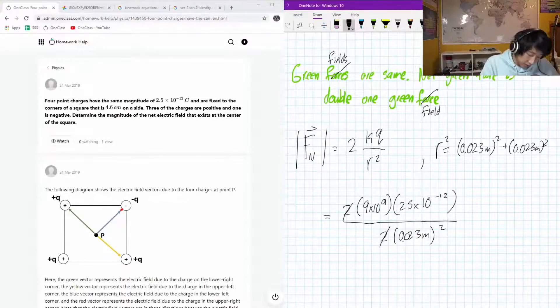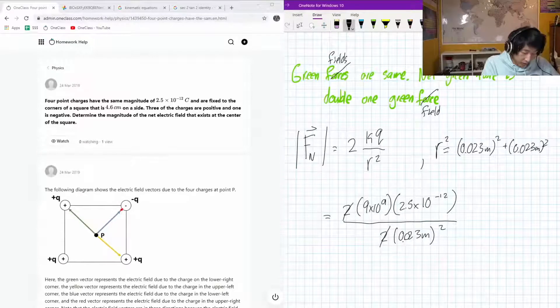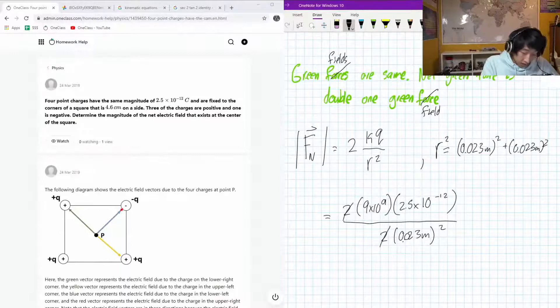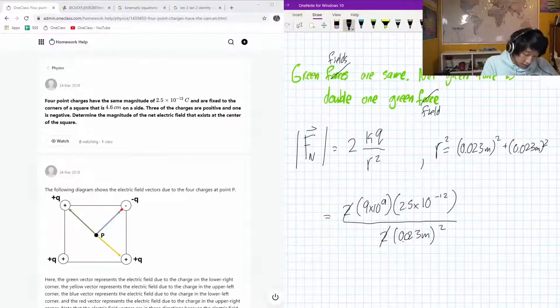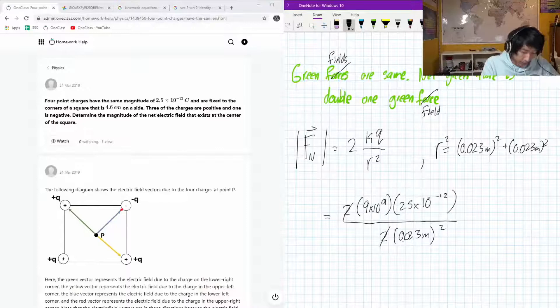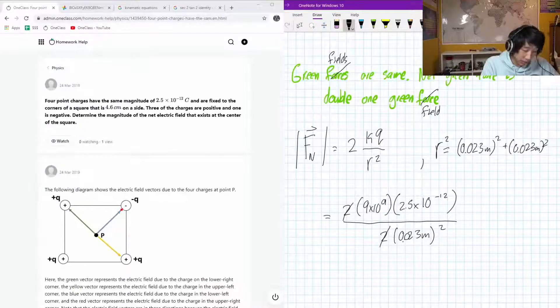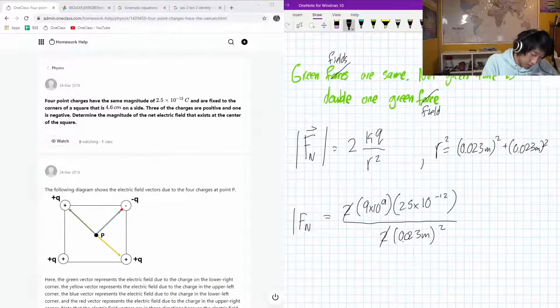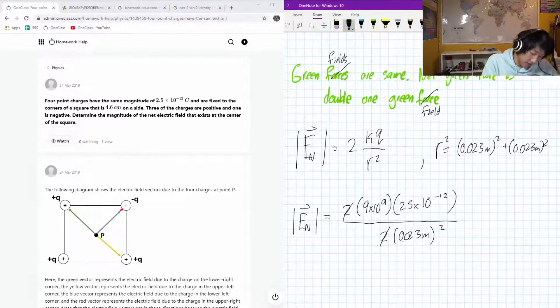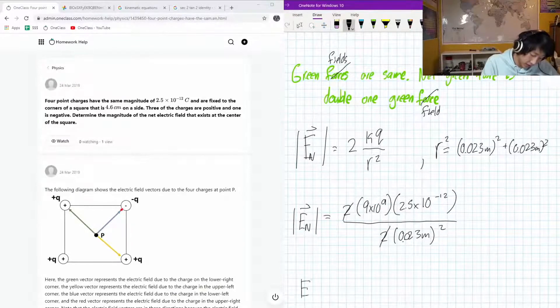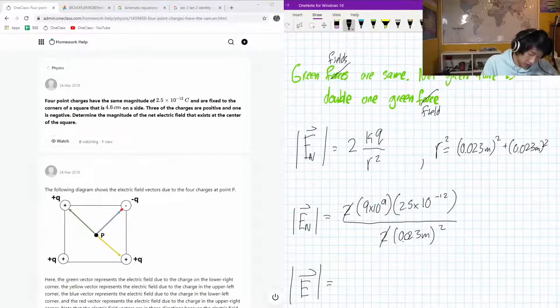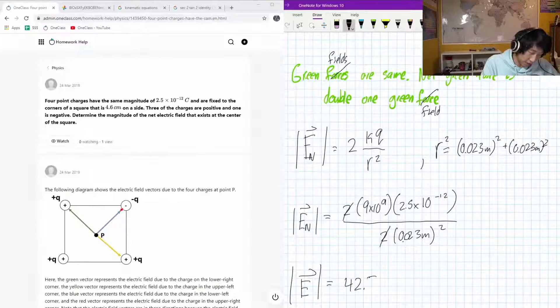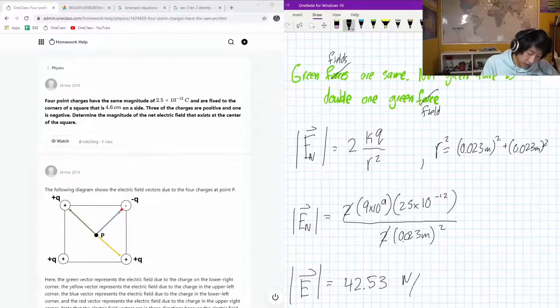Okay, so the 2's cancel out, so it's going to simplify the math a little bit. Let's calculate this out: 9 times 10 to the power 9 times 2.5 times 10 to the power negative 12, all divided by 0.023 squared. It should be electric field, so it should be an E.